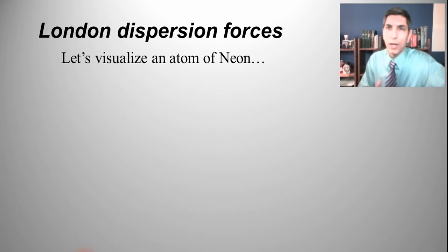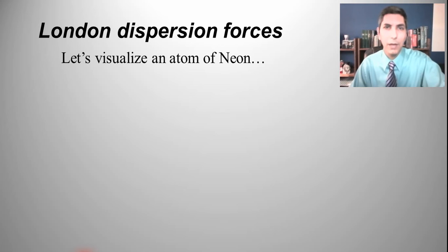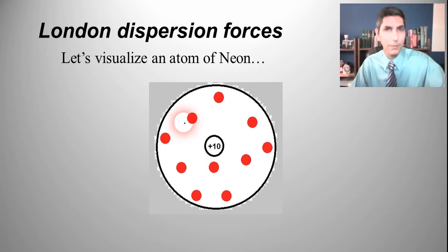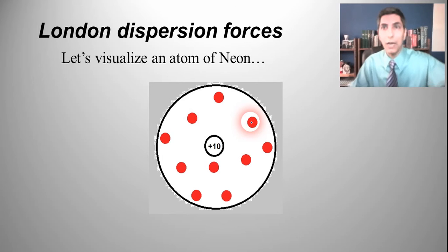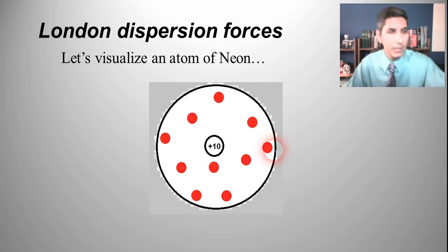Let's talk about the very first and most fundamental intermolecular force: London dispersion forces. Let's imagine an atom of neon. This is not to scale, but in the middle we have 10 protons and 10 electrons — represented here by the 10 little red circles — just buzzing around the atom in their energy levels. Sometimes those electrons are a little closer to the nucleus than others, but they're buzzing around in that same way.